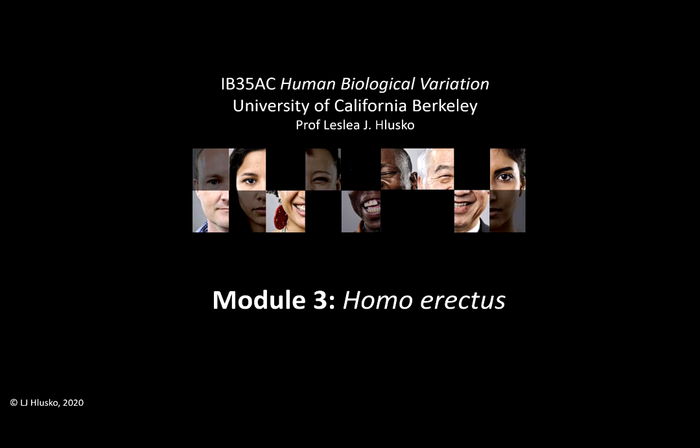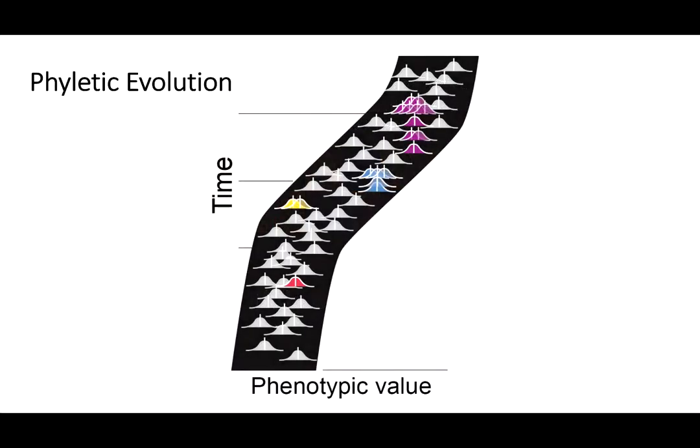In this video, I'm going to take you into an example of phyletic evolution within human evolution to show you how unsimple evolution is. You're now familiar with these distributions and how evolution is the process of how distributions of a phenotype shift over time from one population to the next — populations evolving.